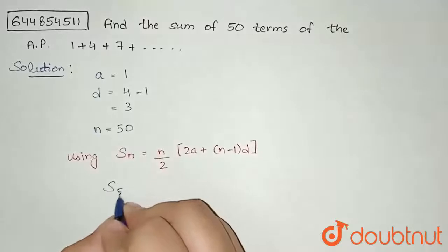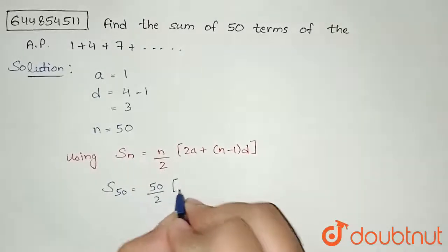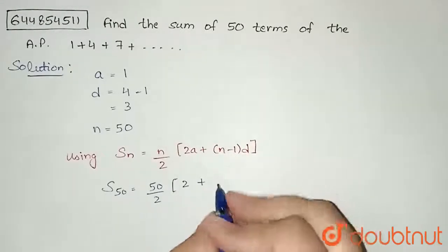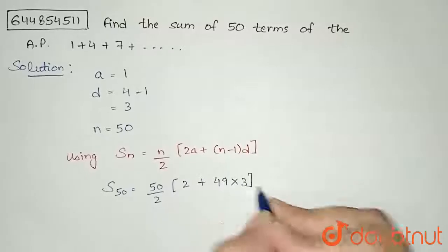So my S50 will be equal to N, that is 50 by 2, 2A is 1 so just 2, N minus 1 that is 50 minus 1, so 49, and my value of D is 3.